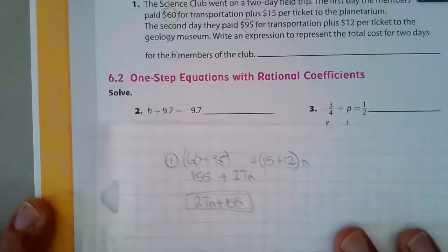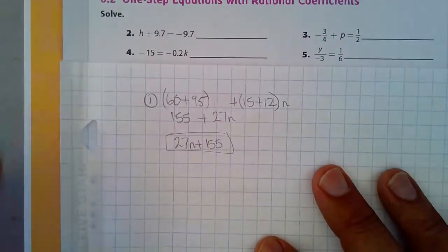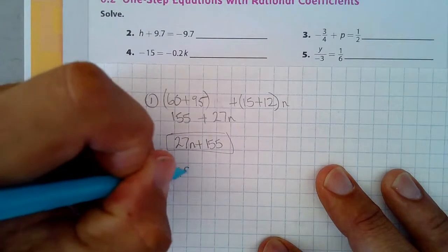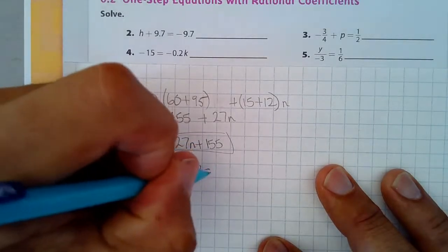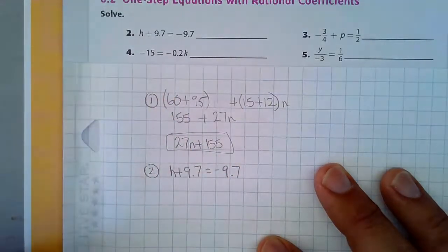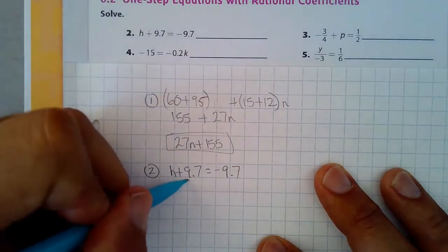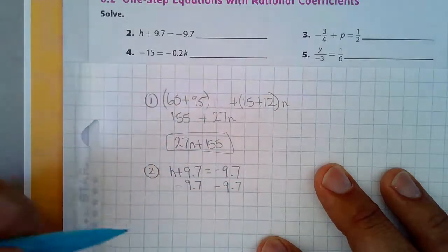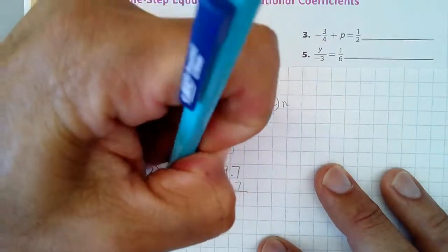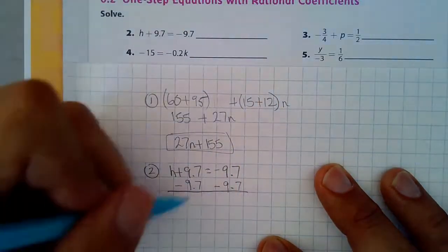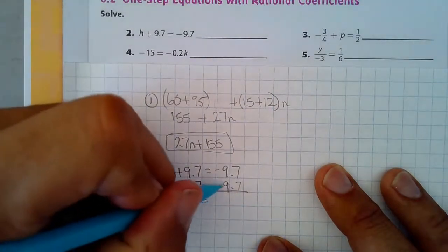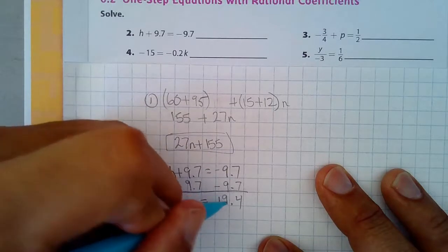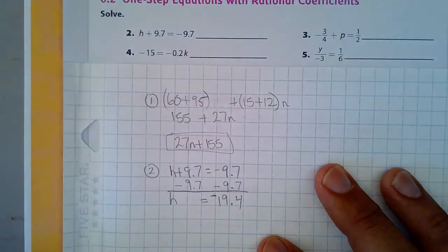Number two, we have h plus 9.7 equals negative 9.7. I would have to subtract 9.7 from both sides of the equal sign. And we have h is equal to negative 19.4.